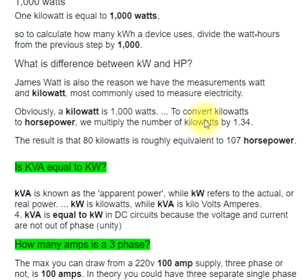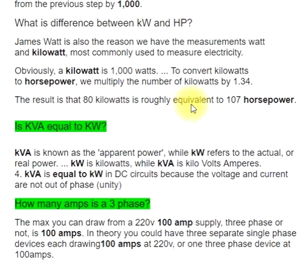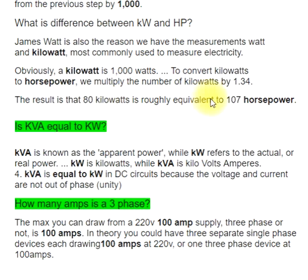What is the difference between kW and HP? James Watt is also the reason we have the measurements watt and kilowatt, most commonly used to measure electricity. Obviously, a kilowatt is 1000 watts. To convert kilowatts to horsepower, we multiply the number of kilowatts by 1.34. For example, 80 kilowatts is roughly equivalent to 107 horsepower.